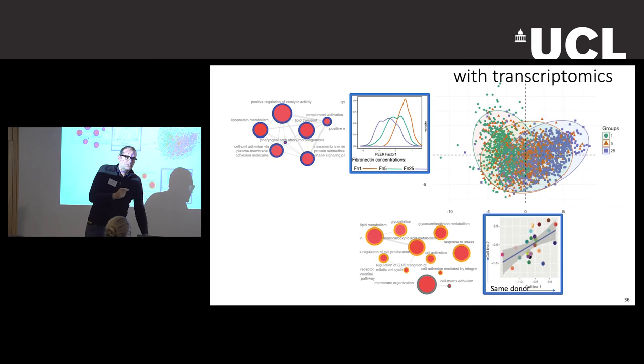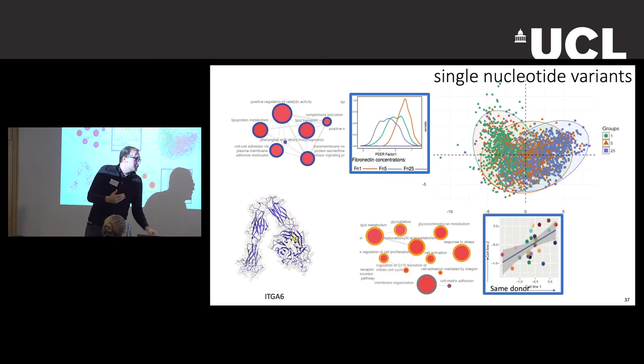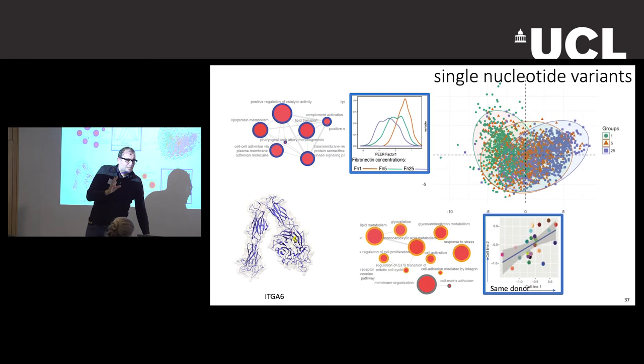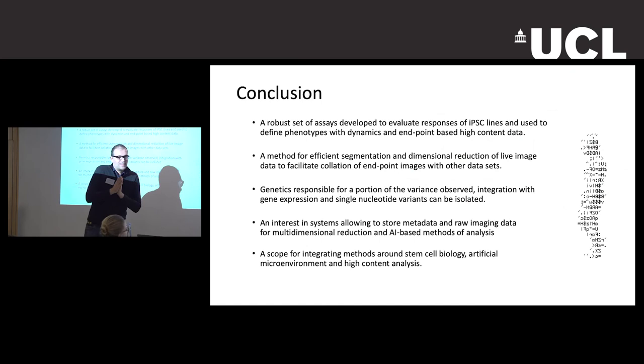We also pushed this further to define phenotypic outliers in association with single nucleotide variants. Looking specifically at integrin and cell spreading, we could define that low spreading correlates to specific single nucleotide variants. This is published and gives a sense of how we've used these methods.